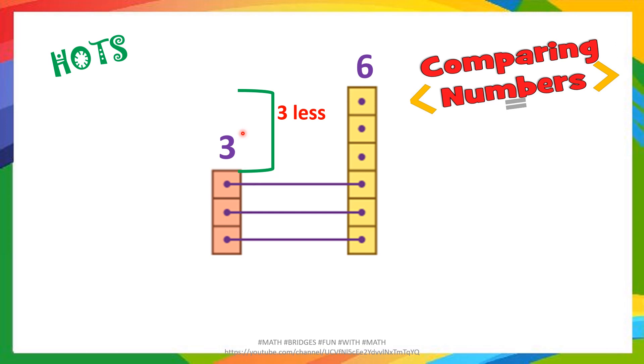Here if you observe, you can see 3 is less than how much. They can count the remaining blocks which have not been mapped: 1, 2, 3. So the child gets the idea of how much it is less. They will write 3 is less than 6 and also understand that 3 is less than 6 by 3. Like this you can give many more examples. It can be 2-digit numbers or 3-digit numbers based on your standard, and they can analyze and visualize this.